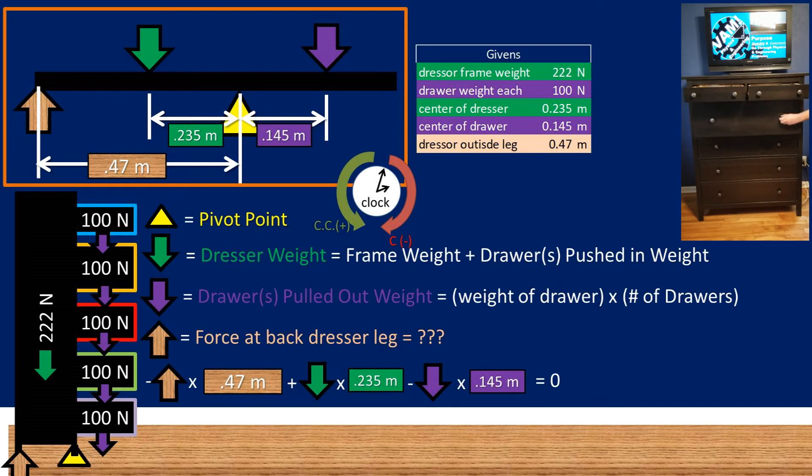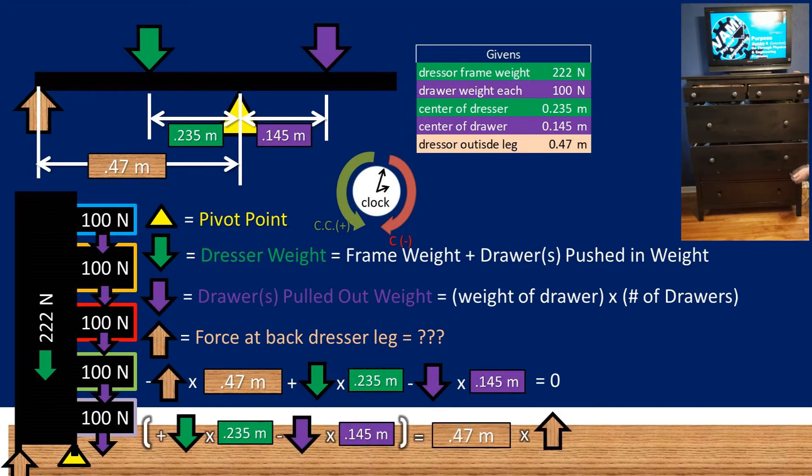Now to get what we are solving for, the force that the floor is pushing back on the dresser, we must add the torque from the back side of the dresser to both sides, then divide by the distance from the back leg to the pivot point. Doing so, we are left with the displayed equation.